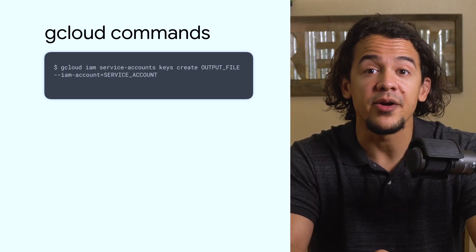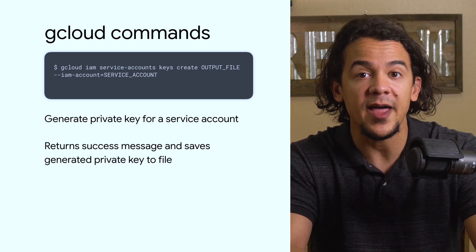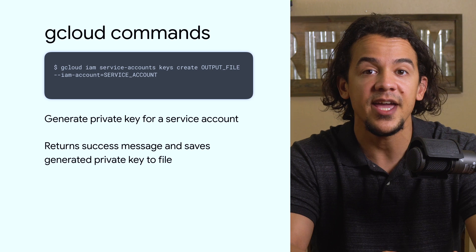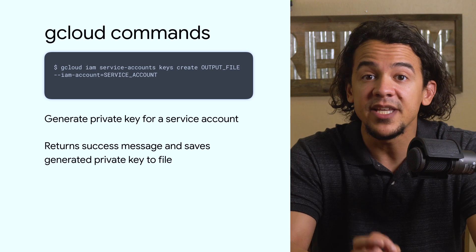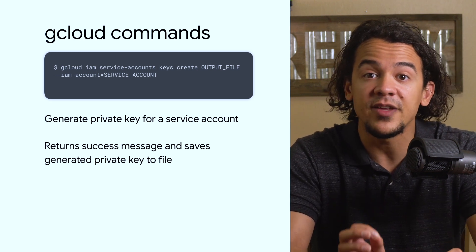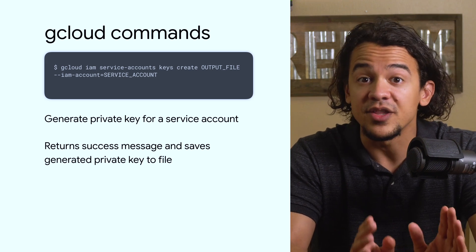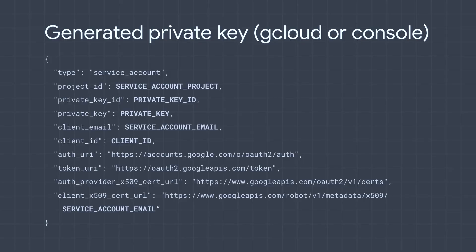To have Google generate a new key pair, you'll use `gcloud iam service-accounts keys create`, followed by the output file you want to save your private key to, and the `--iam-account` flag to indicate the service account you want the key for. This will immediately save the private key to the file indicated, and this will be the only time the private key is provided to you. Remember, it's your responsibility to keep the private key safe and secure. The output file will look like a JSON object with fields like project ID, private key ID and private key itself, the service account email and ID, and more.